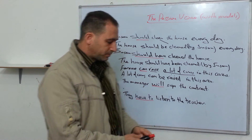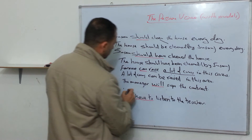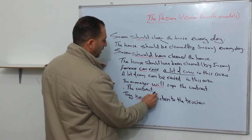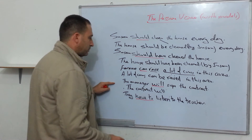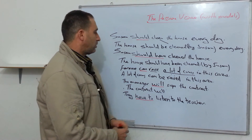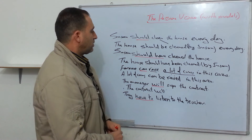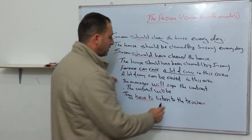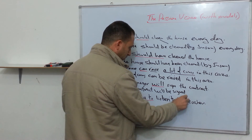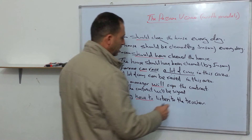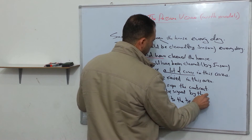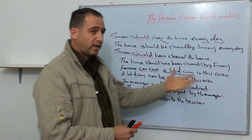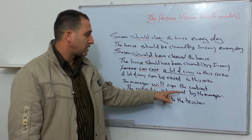'The manager will sign the contract.' So I start with the object: the contract. The modal verb is 'will.' Before the main verb, I add the suitable form of 'to be' — after 'will' we have a base, so 'will be.' The main verb becomes verb three: signed. 'Will be signed.' If I want to say by who: 'by the manager.' So: 'The contract will be signed by the manager.'